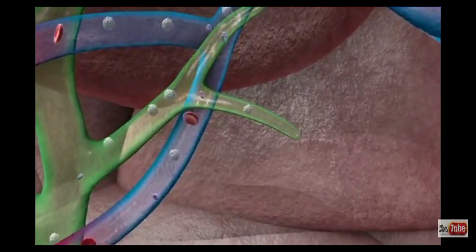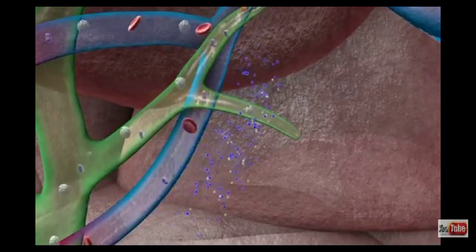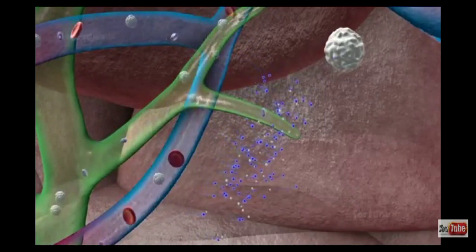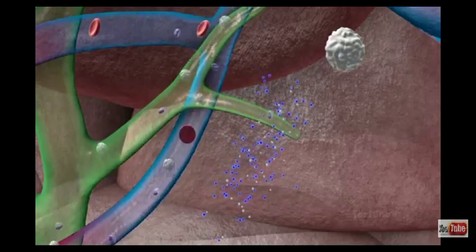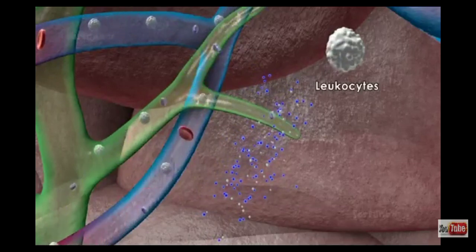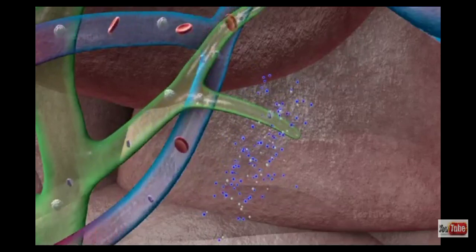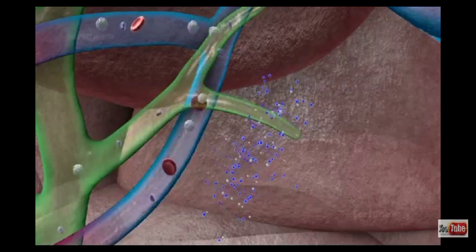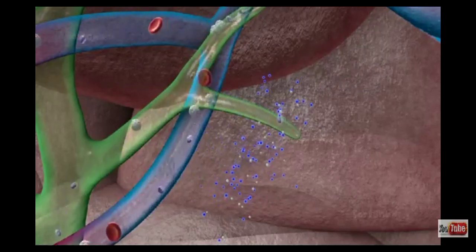Tissue fluid differs from the blood plasma in that it contains white blood cells, also known as leukocytes. Most of this tissue fluid returns to the capillary vessels through venules.